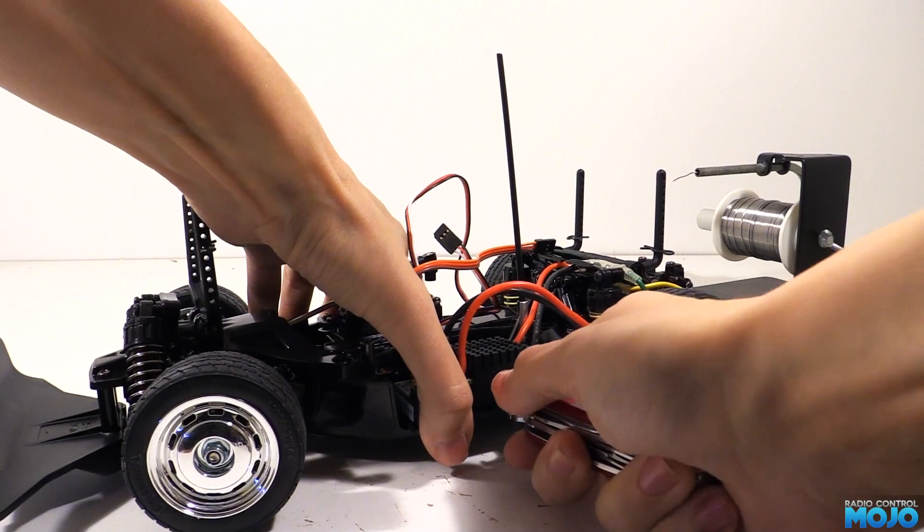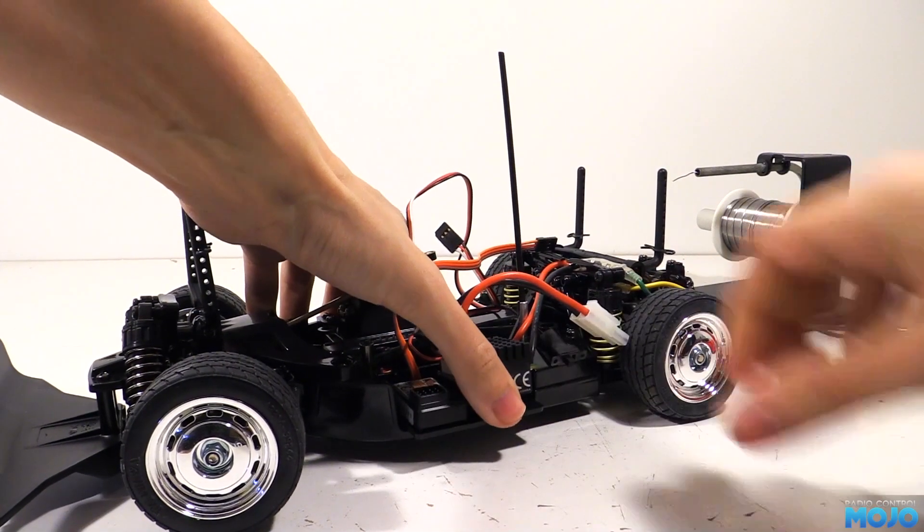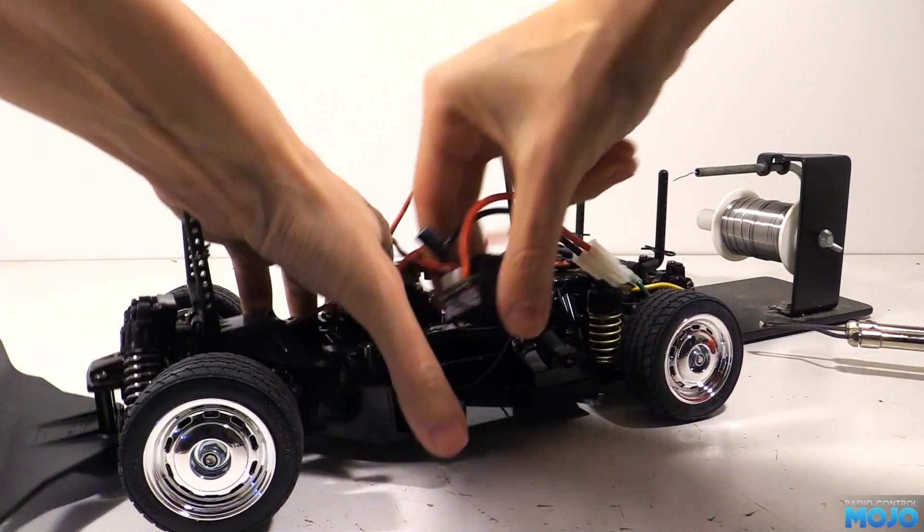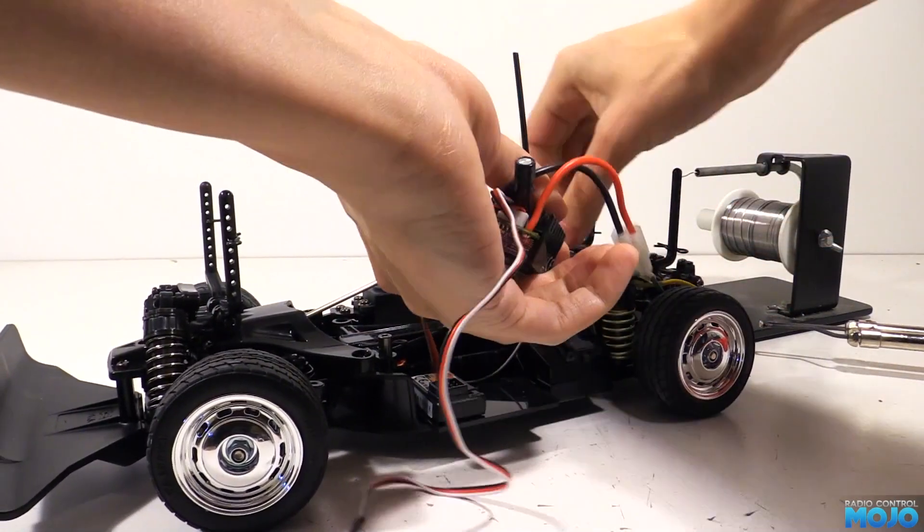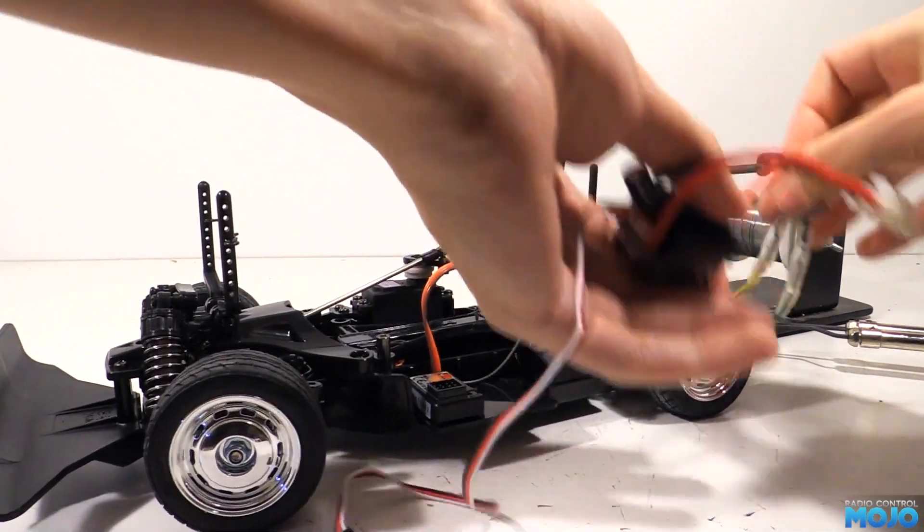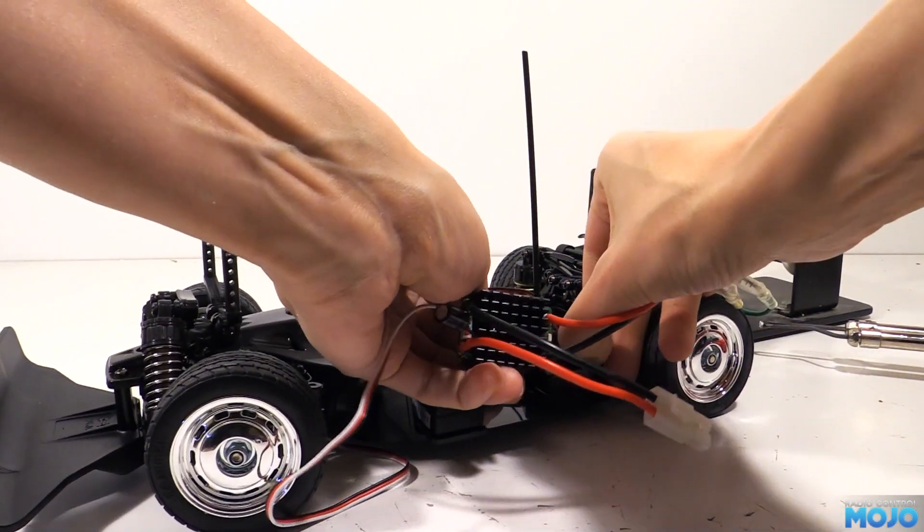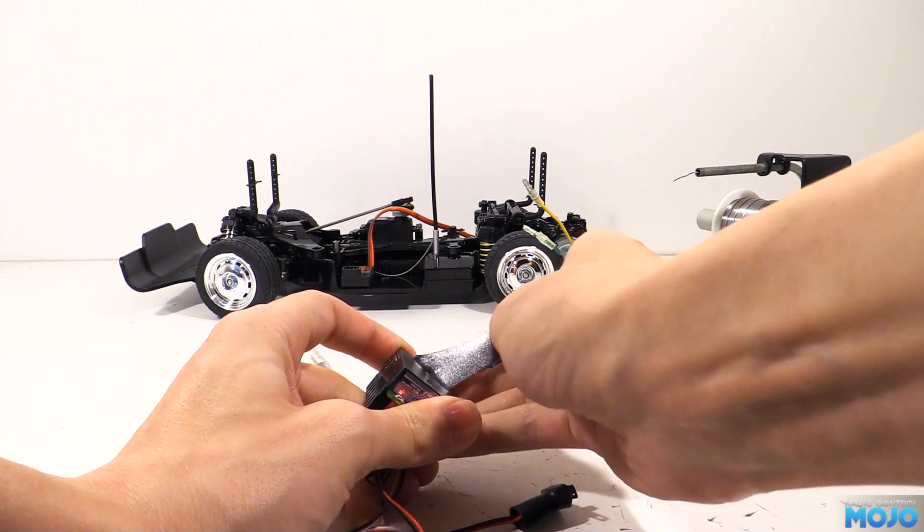We'll need to remove the ESC from the chassis. It's only stuck in with the kit double sided tape. You can ease it off with a flat blade screwdriver. A nice blunt one is ideal so we don't mark up the plastic. All the connectors can get unplugged and the switch removed. Peel off the old tape and we're ready to mod.